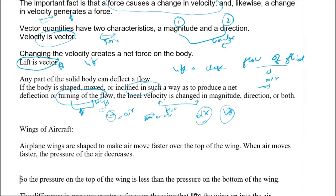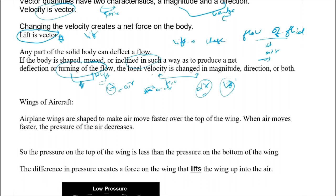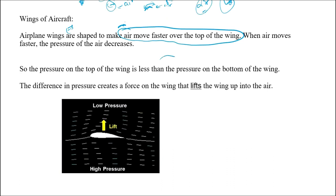By turning the flow of the air with the help of the aircraft wings, we are able to generate lift. The aircraft wings are shaped so that when they are inclined, this shape causes the air to move faster over the top of the wings. The air on the top of the wings moves at a faster rate compared to the air below. Because of this change in velocity, a low pressure is created on the top of the wing.